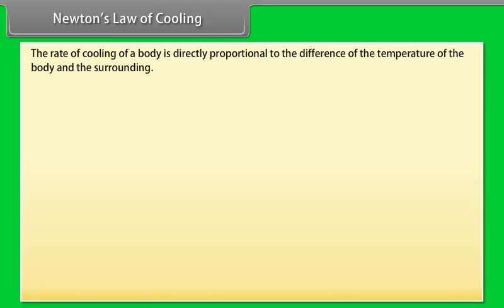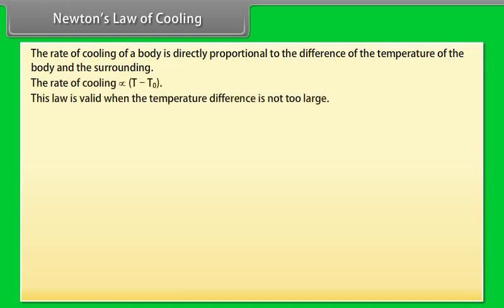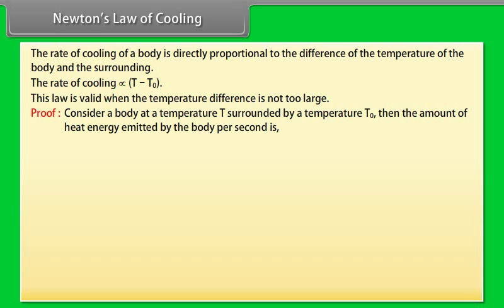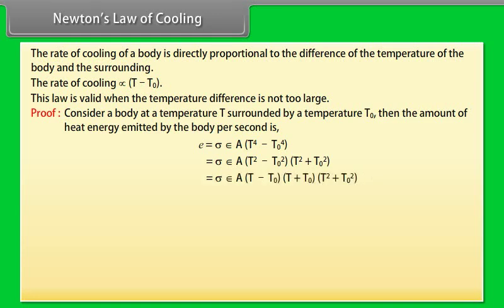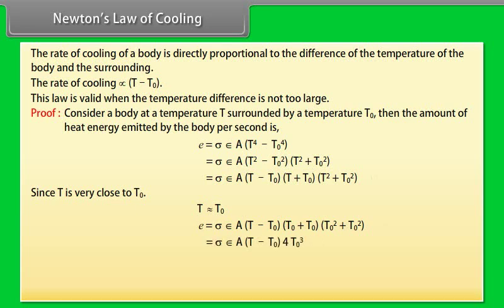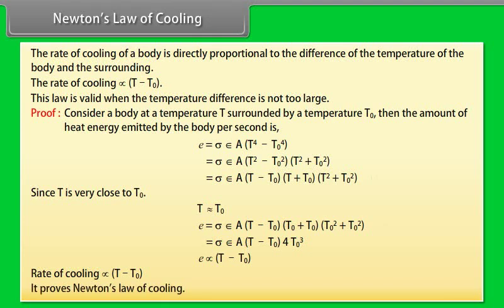Newton's Law of Cooling states that the rate of cooling of a body is directly proportional to the difference between the temperature of the body and its surroundings. This law is valid when the temperature difference is not too large. Proof: Consider a body at temperature T surrounded by temperature T0. The heat energy emitted per second is E equals sigma epsilon A (T minus T0)(T plus T0)(T squared plus T0 squared). Since T is very close to T0, E is directly proportional to T minus T0, which proves Newton's Law of Cooling.